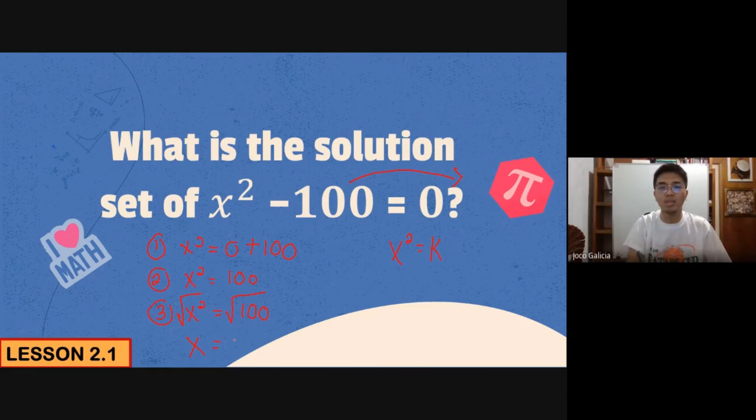The third step result is positive and negative 10. Sir, is this the final answer? Not yet, class. Because we need the solution set. We have to write it in the form of a set.